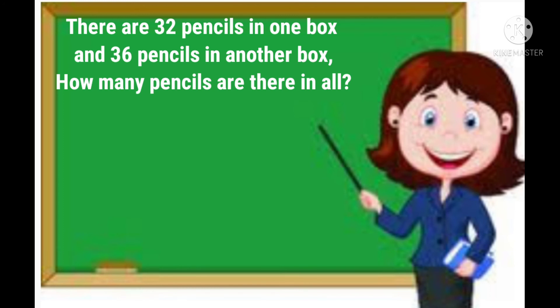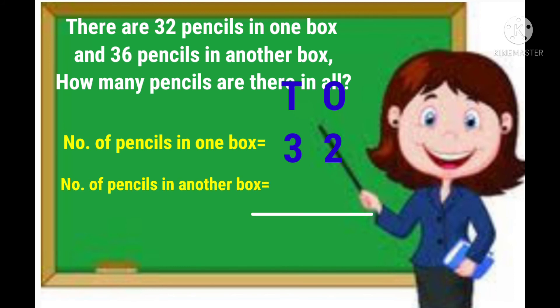In the first line, we will write number of pencils in one box is equal to 32. In the second line, we will write number of pencils in another box is equal to 36. Let's find the total.